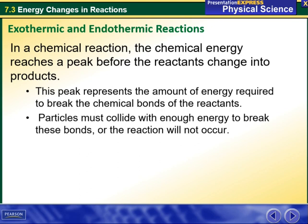In a chemical reaction, the chemical energy reaches a peak before the reactants change into products. This peak represents the amount of energy required to break the chemical bonds of the reactants. Particles must collide with enough energy to break these bonds, or the reaction will not occur.